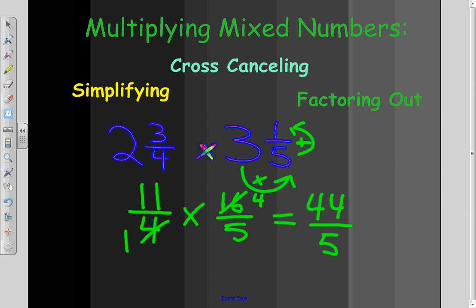Now, this problem isn't complete yet, because we're left with an improper fraction. So, the next step is to take 44 divided by 5, because that's what the fraction 44 over 5 actually means, or 44 fifths. 5 goes into 44 8 times.